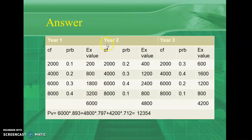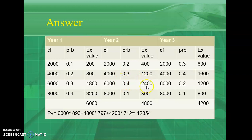Just like that, calculate the expected value of cash flow for Year 2. Write the cash flows and probabilities in respective columns and multiply them. 2000 × 0.2 = 400; 4000 × 0.3 = 1200; 6000 × 0.4 = 2400. Find the sum — that is 4800.